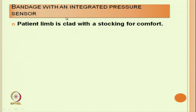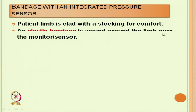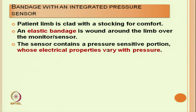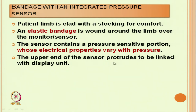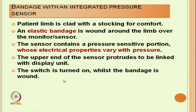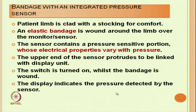Another bandage has a pressure sensor inbuilt within the bandage itself. The patient's limb is clad with a stocking for comfort and the elastic bandage is applied around the limb over the monitor sensor. The sensor contains a pressure-sensitive portion whose electrical properties vary with pressure. The upper end of the sensor protrudes and can be connected with a display unit. Once the switch is turned on, the display indicates the pressure detected by the sensor.